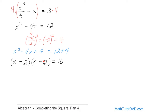Double-check yourself: negative 2 times negative 2 gives you the positive 4. The inside terms are negative 2x and negative 2x — you add them and get negative 4x. So you're good. Write it as a square term equals 16. That's the end game of all of these problems — you want a square term equal to a number.